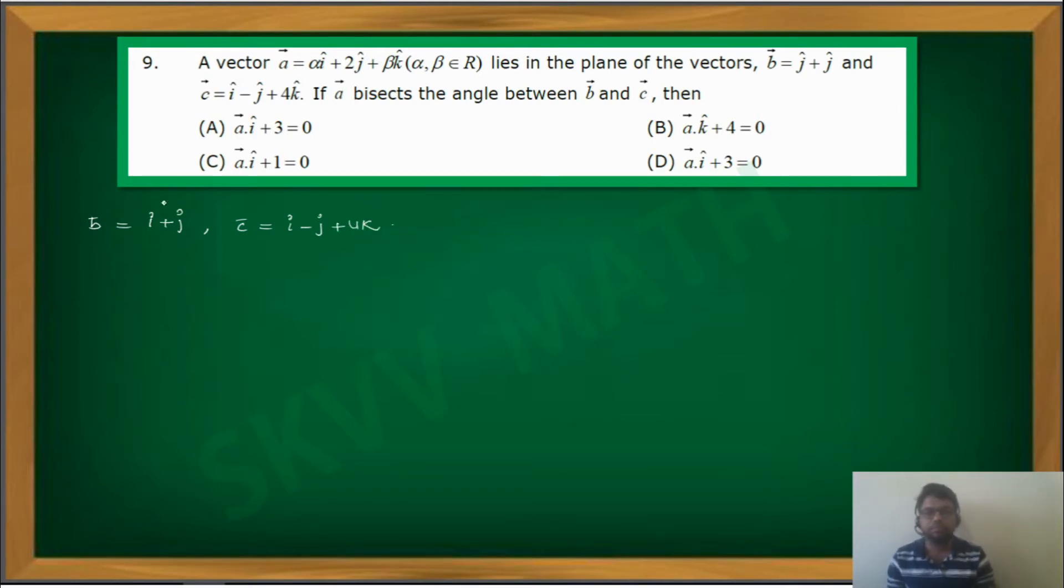Now what we have to do is, one more information is given about a bar. A bar bisects the angle between b bar and c bar. Bisects the angle between b bar and c bar means maybe it is the internal angular bisector of b bar, c bar.